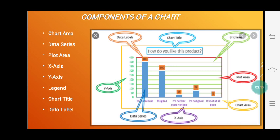Next one is the plot area. The plot area is the area inside the boundary of the axis, which includes the data series of the chart. It is also known as category axis.